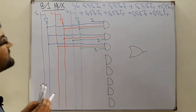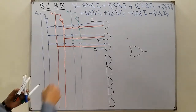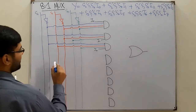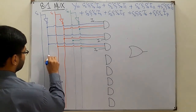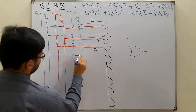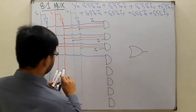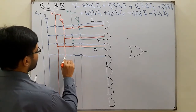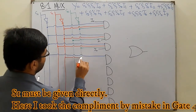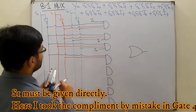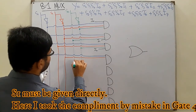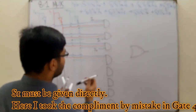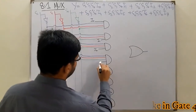To the fourth gate we have S2's complement, then S1 directly, and S0 directly, and I3 connected to it. So that covers the first four AND gates corresponding to I0 through I3.